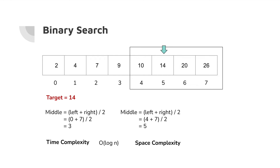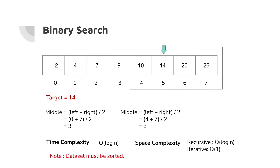What about space complexity? There are two types of space complexity for binary search, depending on whether we implement it recursively or iteratively. In the recursive way, Java runtime allocates memory to store the call stack, and every time we divide the dataset by half. So the recursive space complexity is O(log n). But in the iterative way, there is no extra space being allocated — the space complexity is always O(1).